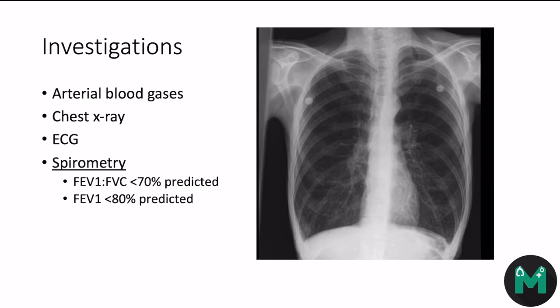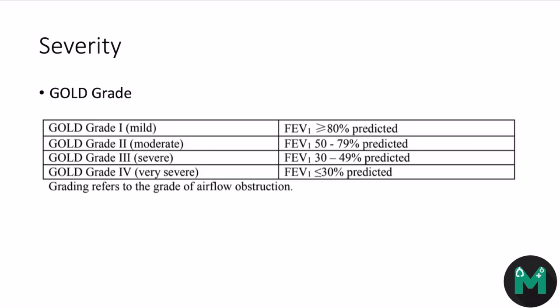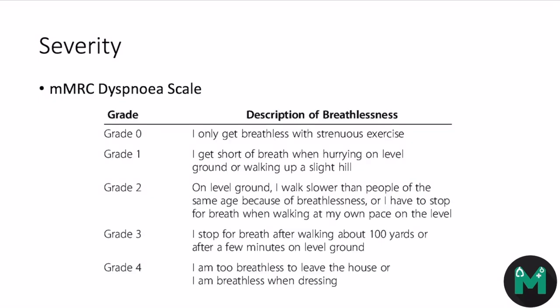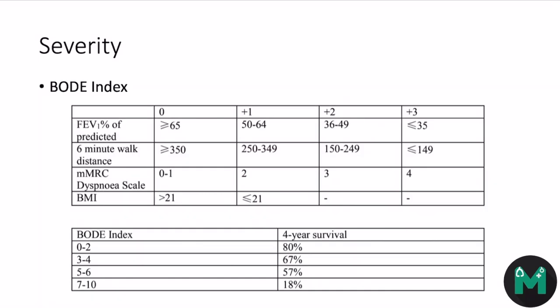FEV1 is also used to assess the severity of COPD. You may also want to culture any sputum and check antitrypsin levels if indicated. Severity can be assessed using the GOLD grading (1 to 4, mild to very severe, based on FEV1 predicted percentage), the MMRC dyspnea scale (0 to 4, based on patient perception of breathlessness), or the BODE index, which combines multiple factors and estimates four-year survival.